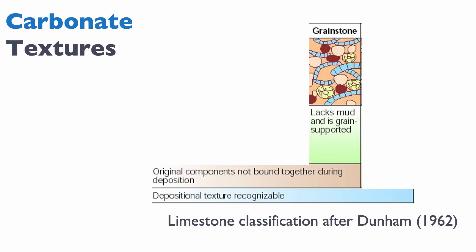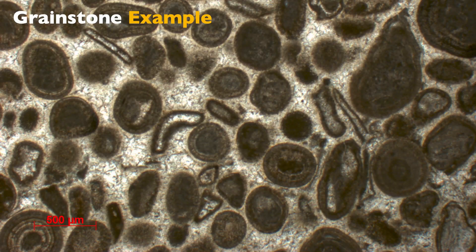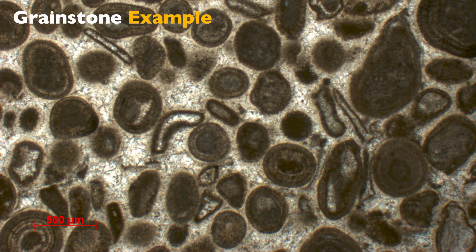Now, if you don't have any mud, but the original components are not bound together during deposition, then you are in what we know as a grainstone. Here's an example of a grainstone. Notice that compared to the previous example, we have the grains touching. In between the grains we have a cement — not mycrite, but a cement — which indicates that this was pore space before it was filled by the cement. Those grains then form a nice grainstone.